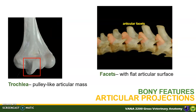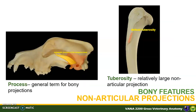A trochlea is a pulley-like articular mass, like the distal end of most long bones. Facets are those with relatively flat articular surfaces for articulation, like in the lumbar vertebrae. For non-articular projections, a process is the general term for any bony projection; they can be small or can be large and long, as in the case of the zygomatic process of the temporal bone.